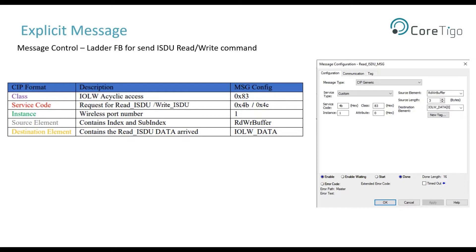Additional parameters include attribute 0, source element — the tag that contains the ISDU index and subindex — with a length of 3 bytes, and destination element — the tag that will receive the data when using ISDU read, or the data to be sent when using ISDU write.